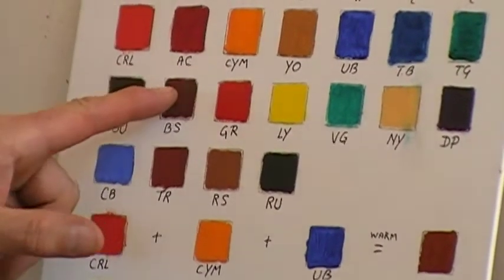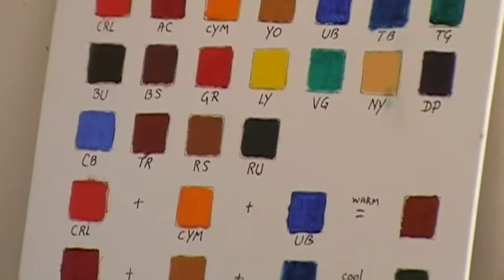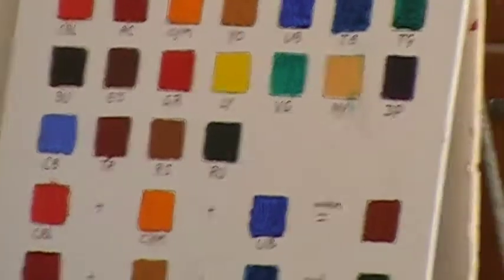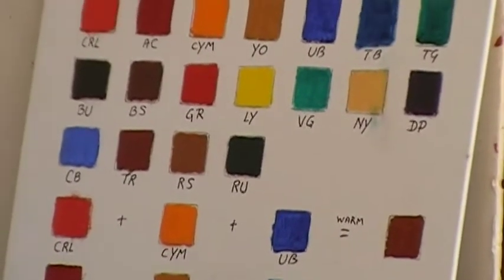...tiara rose, raw sienna, raw umber, you should actually buy these because they're basically dirt mixed in with linseed oil and it's easier and cheaper to buy them than to mix them.